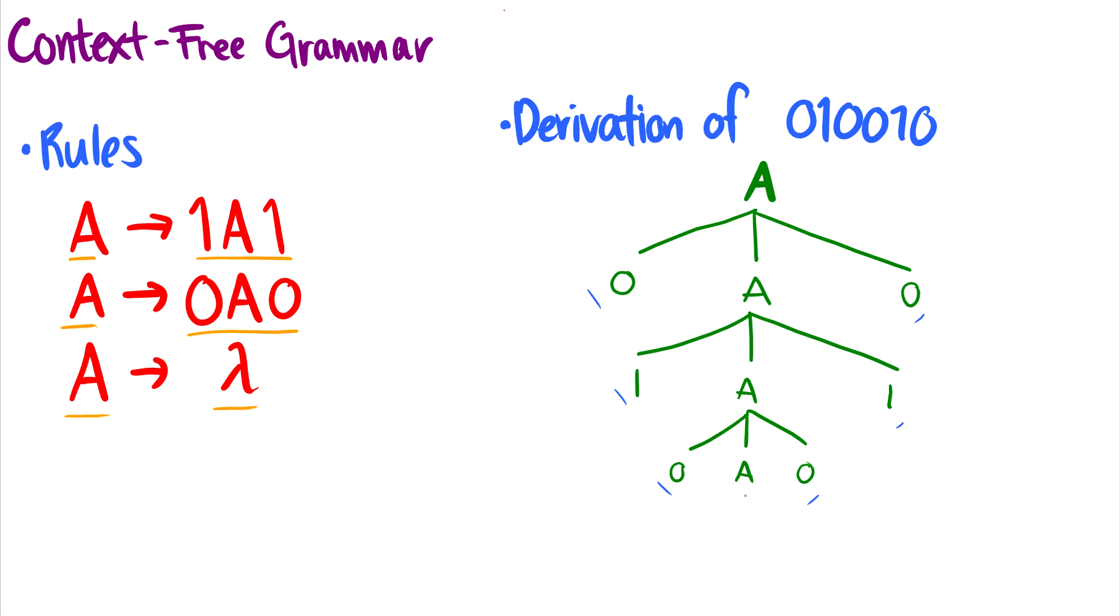So in order to finish this off, we can do A to lambda. And that'll give us the empty string there. So our final result is 010010. So context-free grammars allow us to do these palindromes, which is really cool. And we can see it's much more powerful than regular expressions already.